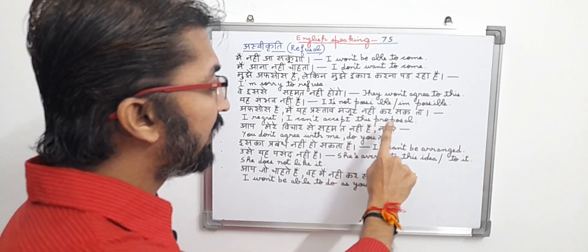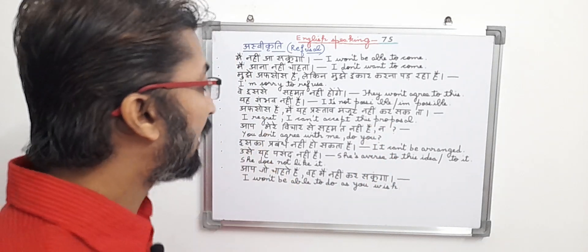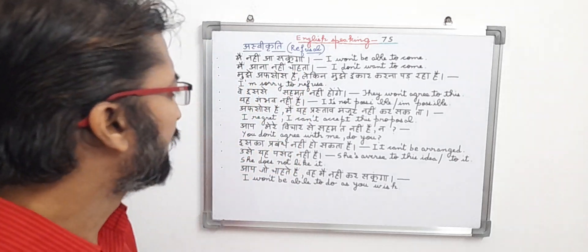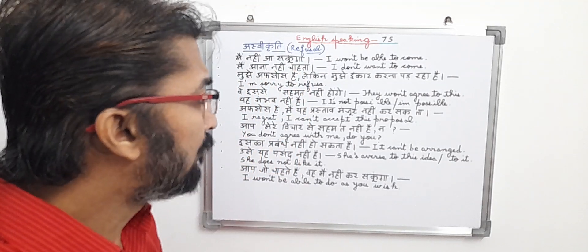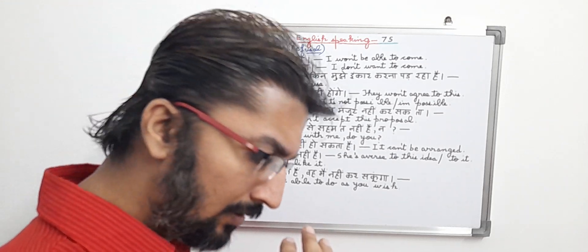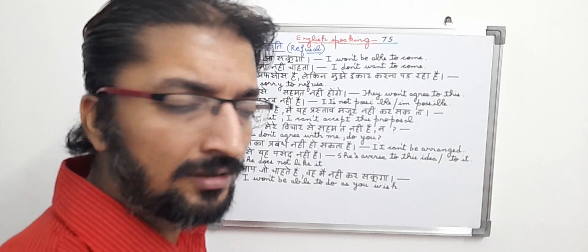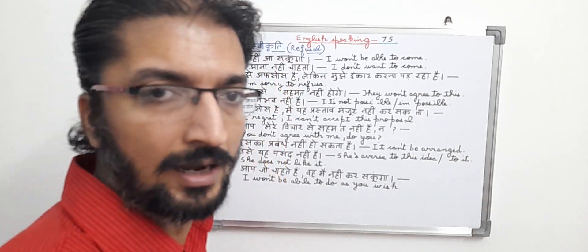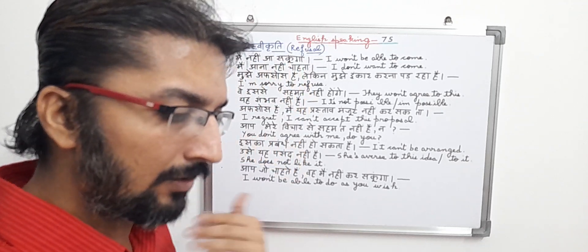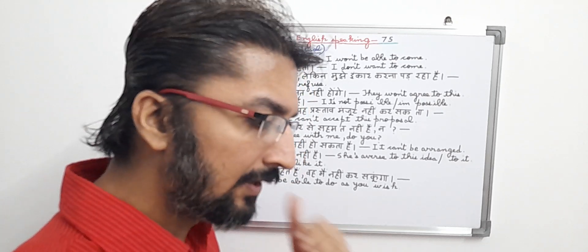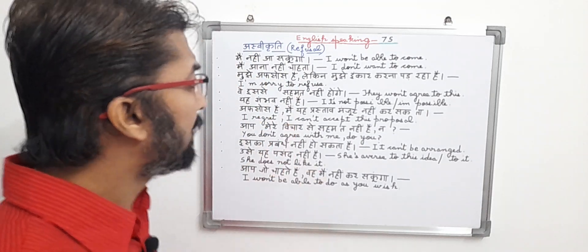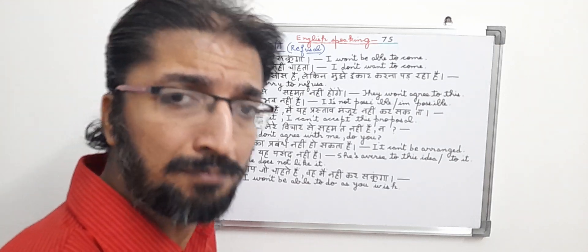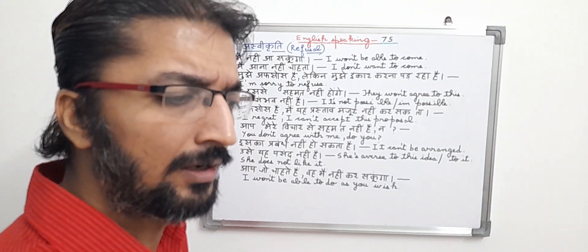In English, it means: I regret, I can't accept this proposal. The person is very much sad that he can't accept the proposal. He may want to accept it, but according to his mind and wishes, he doesn't want to accept the proposal. So: I regret, I can't accept this proposal. This is also a refusal type sentence.